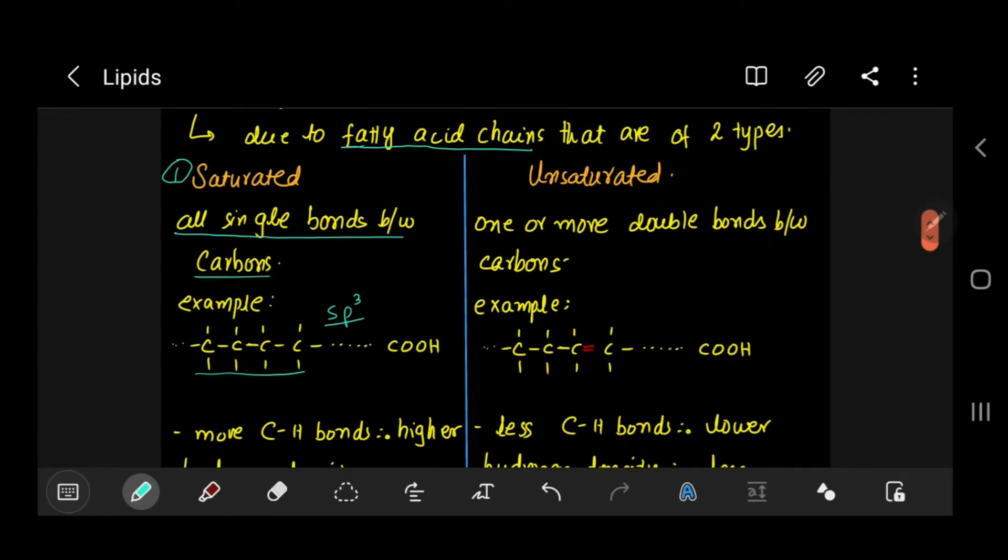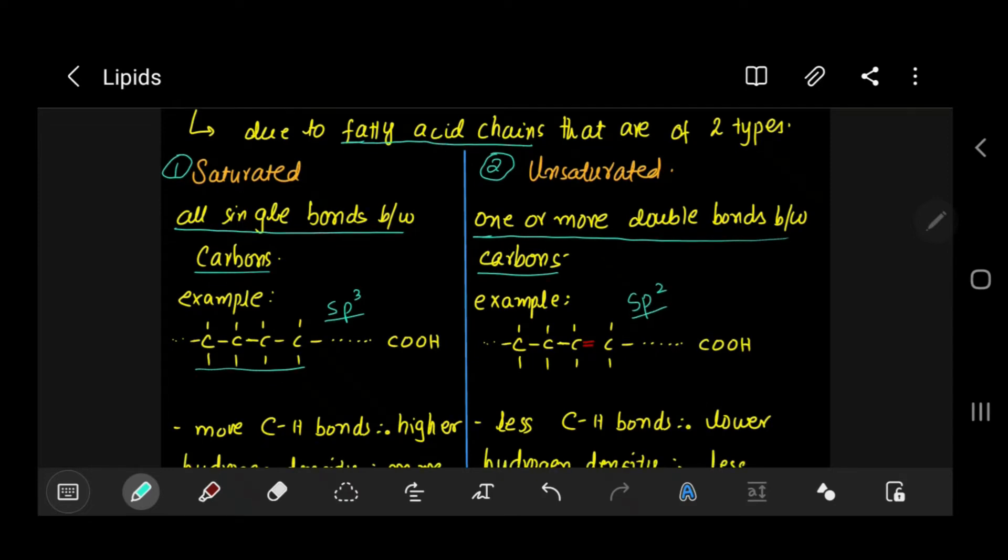On the other hand, the second type of fatty acid chain is unsaturated. Now in unsaturated we have one or more double bonds between carbons. That means these carbons are sp2 hybridized, not all, not necessarily all.